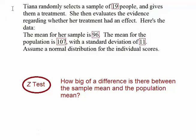At the heart of the z-test is this question: How big of a difference is there between the sample mean and the population mean? Let's apply that question to this following word problem. We're told Tiana randomly selects a sample of 19 people and gives them a treatment. She then evaluates the evidence regarding whether her treatment had an effect. Here is the data: The mean for her sample is 96. The mean for the population is 107 with a standard deviation of 11. Assume a normal distribution for the individual scores.